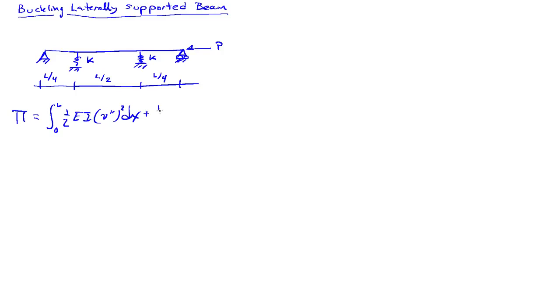Plus the energy from the two springs. So that'll be one-half K, the deflection at the first quarter point squared, plus one-half K, the deflection at the second quarter point squared, plus the potential of the load, which is minus P integral zero to L, one-half the first derivative of the deflection squared dx. As an approximation, we'll write out the deflection in terms of a series. So I equals one to capital N of a set of unknown coefficients times a set of sine terms.